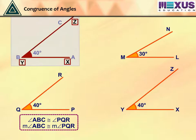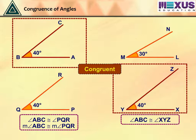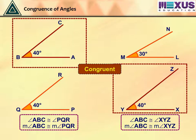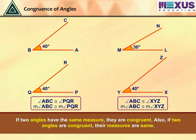Angle XYZ overlaps on ABC. Though its rays are longer, both angles are said to be congruent as rays in a figure only indicate direction and not length. Therefore, we can write angle ABC is congruent to angle XYZ and the measure of angle ABC is equal to the measure of angle XYZ. If two angles have the same measure, they are congruent. Also, if two angles are congruent, their measures are the same.